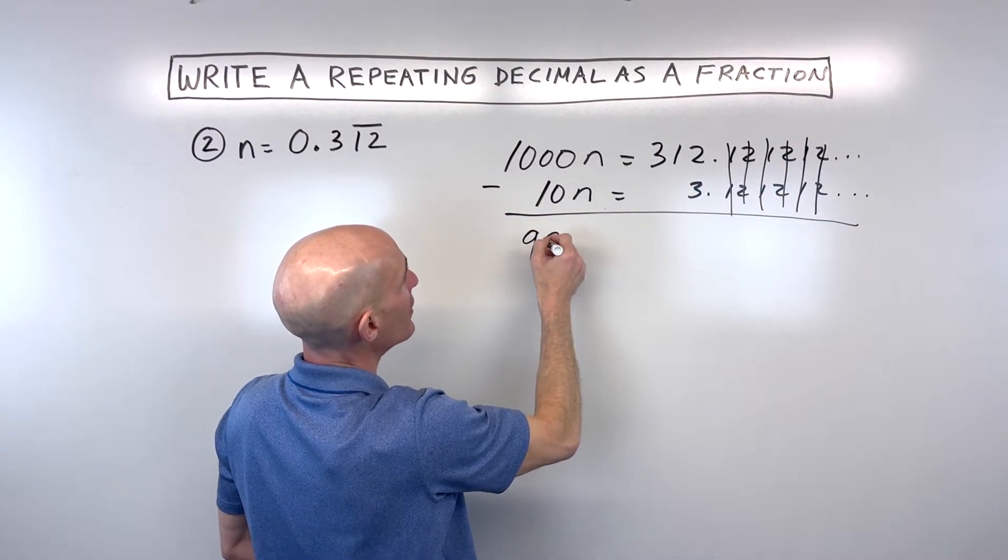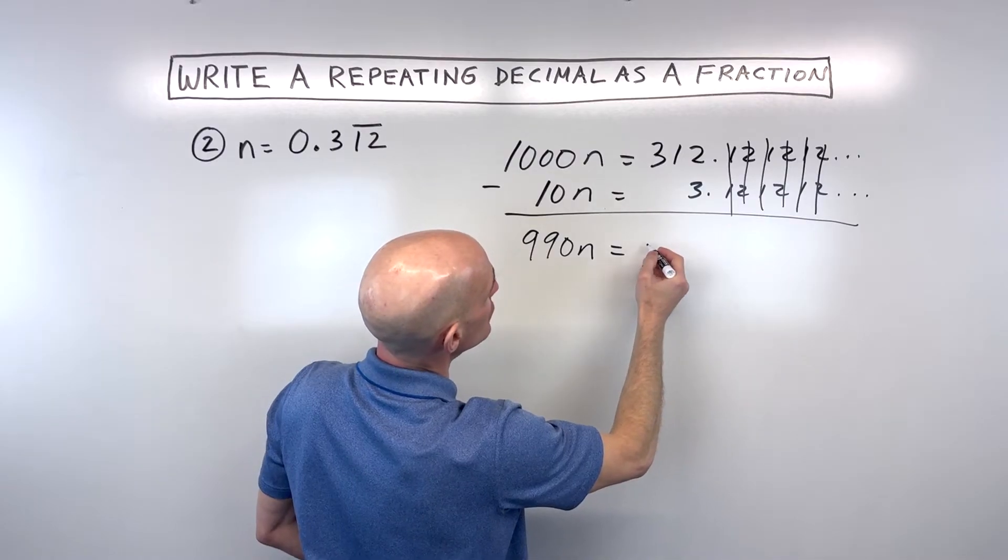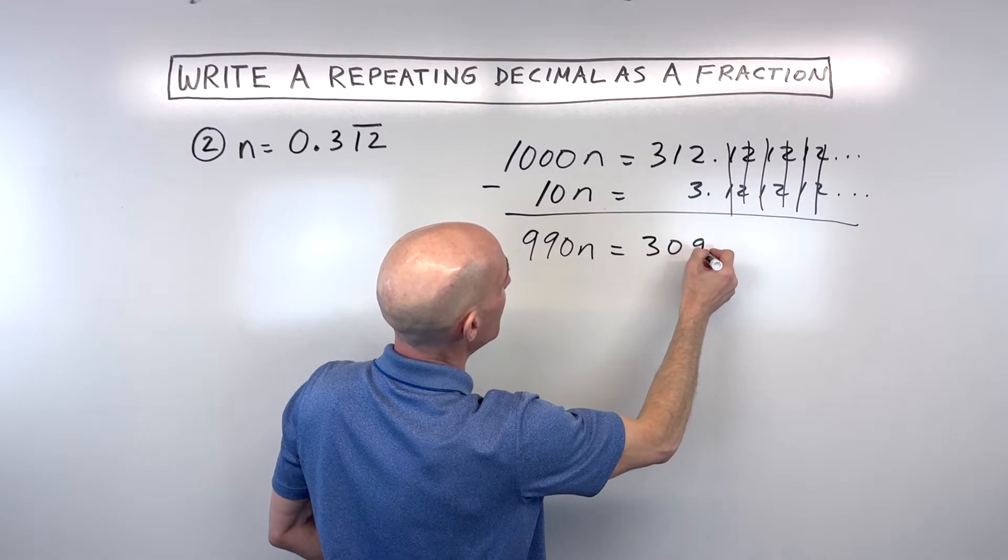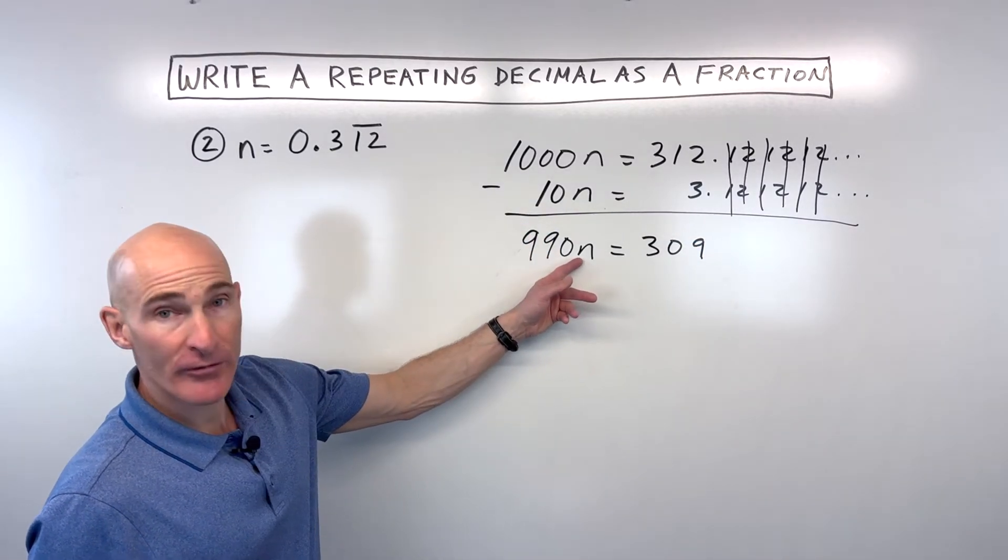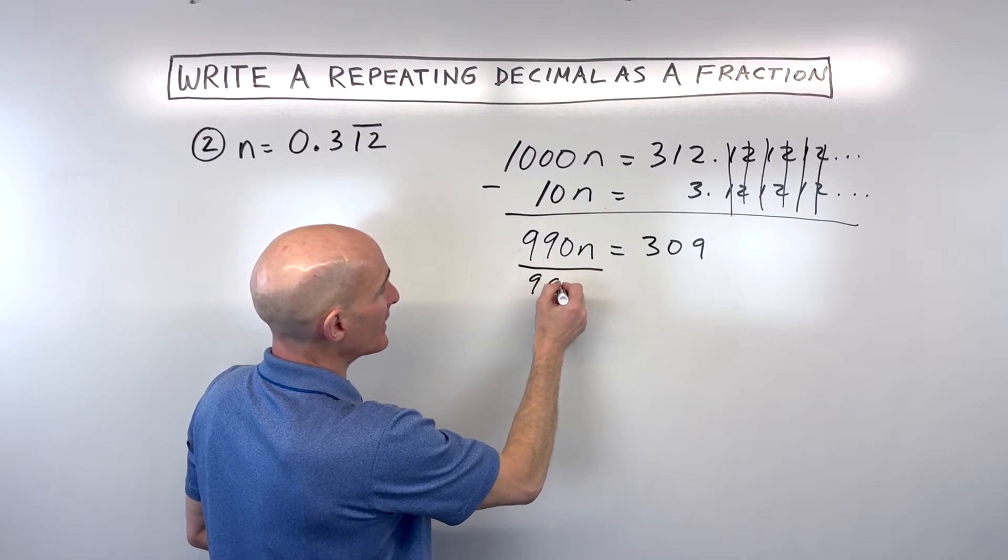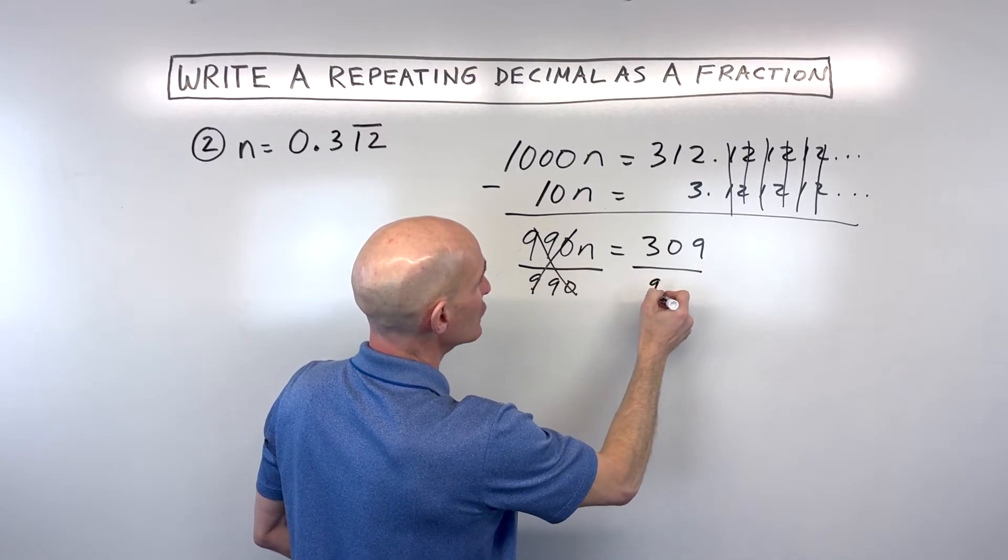So this is going to give us now 990 times our number n is equal to 309. And we don't have that repeating portion any longer. But to solve for our number n, we're going to divide by 990 to get n by itself. Whatever we do to the left, we want to do to the right.